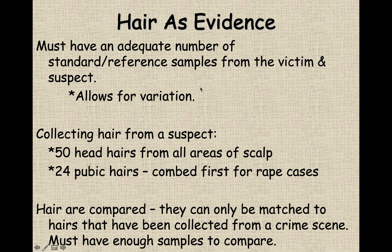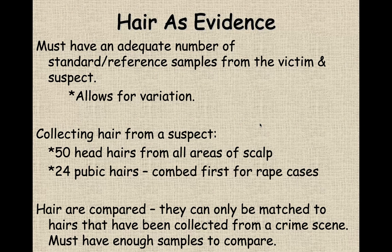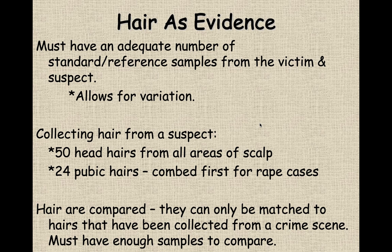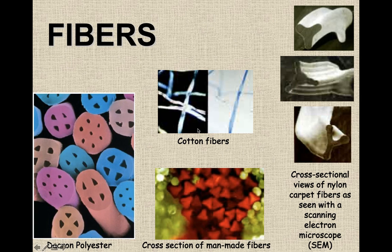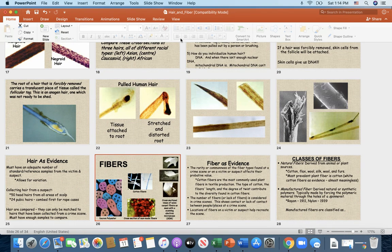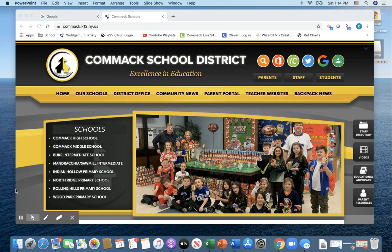When collecting hair evidence from a suspect, a minimum number of hairs must be collected — normally about 50 head hairs from all areas of the scalp. In sexual assault cases, pubic hairs are also collected from the suspect. That concludes section 7.3. Make sure you use the textbook to fill in the rest of the notes, and we'll return with section 7.4 on fibers.